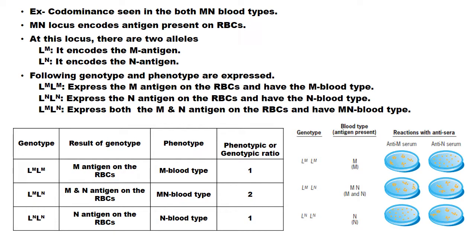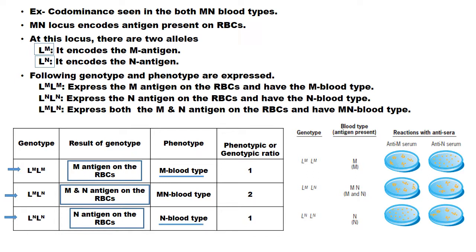MN blood type is one example of co-dominance. The MN locus encodes antigens present on RBCs. At this locus there are two alleles: Lm, which encodes the M antigen, and Ln, which encodes the N antigen. Genotype Lm-Lm encodes the M antigen on the RBC and gives the M blood type. In heterozygous condition Lm-Ln, both alleles express simultaneously; as a result, both M and N antigens are expressed on the RBC and the heterozygous individual has the MN blood type.